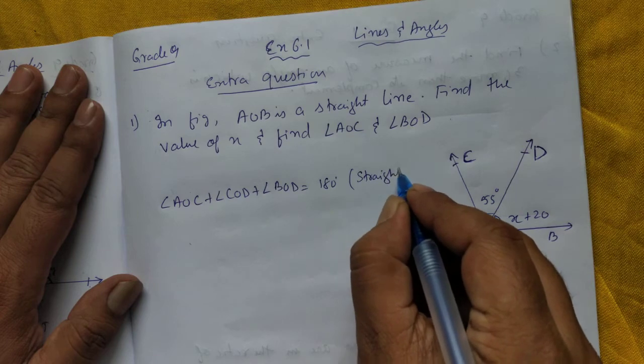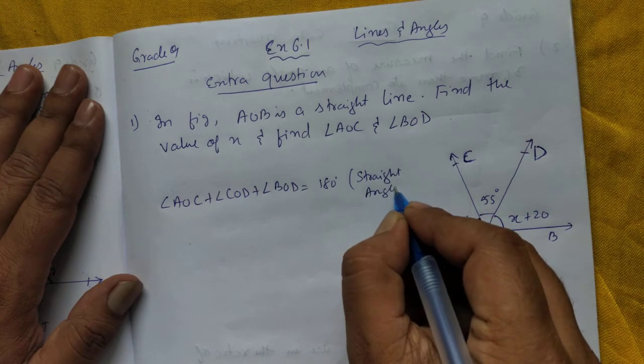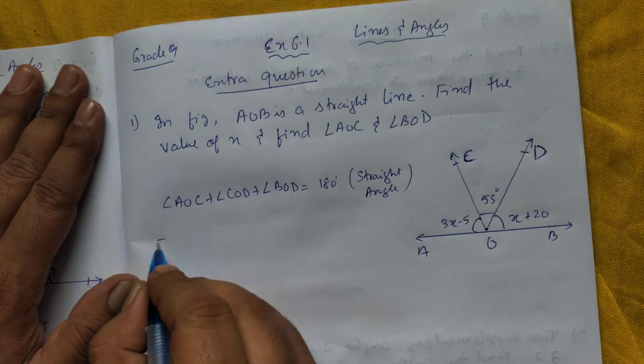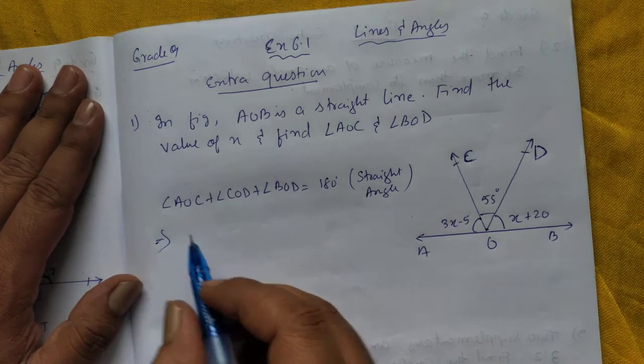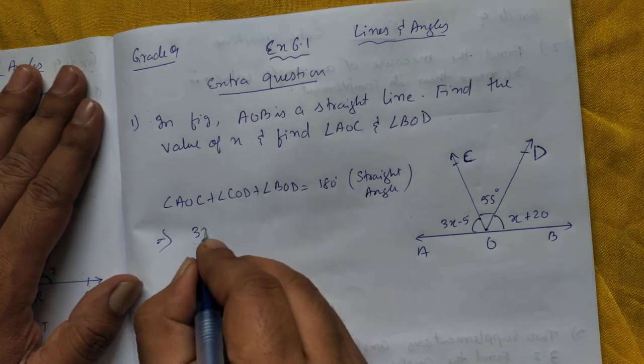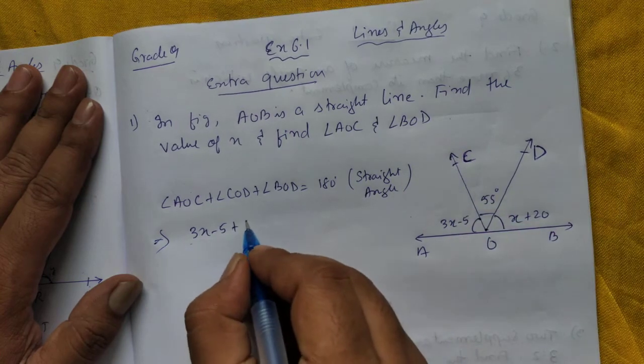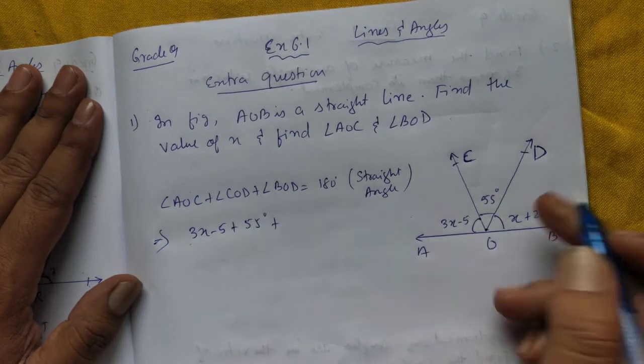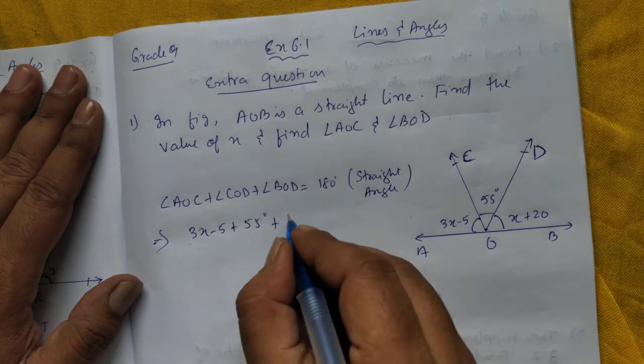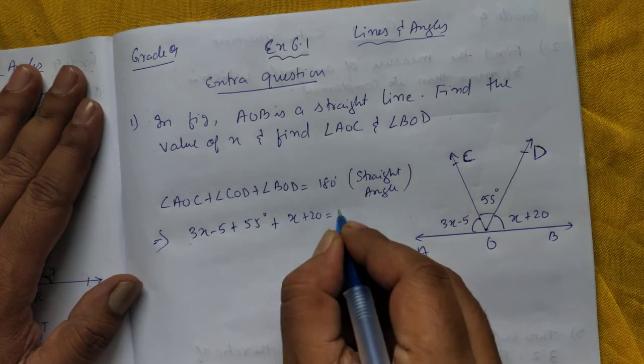So let's say 180 degrees. AOC is 3X minus 5 plus COD is 55 degrees plus DOB is X plus 20, it will come up to 180 degrees.